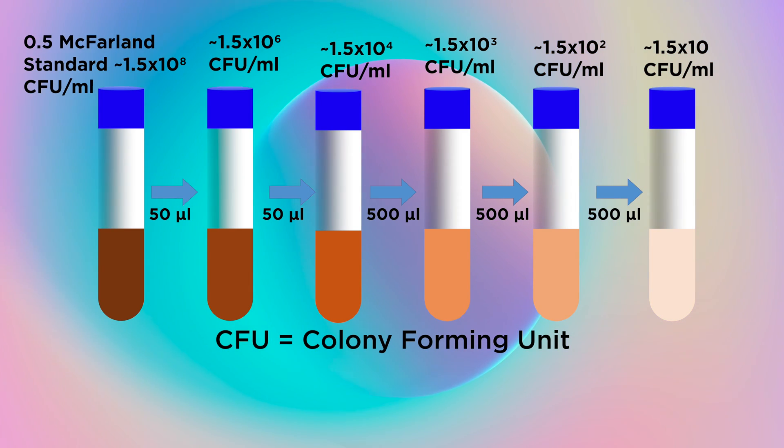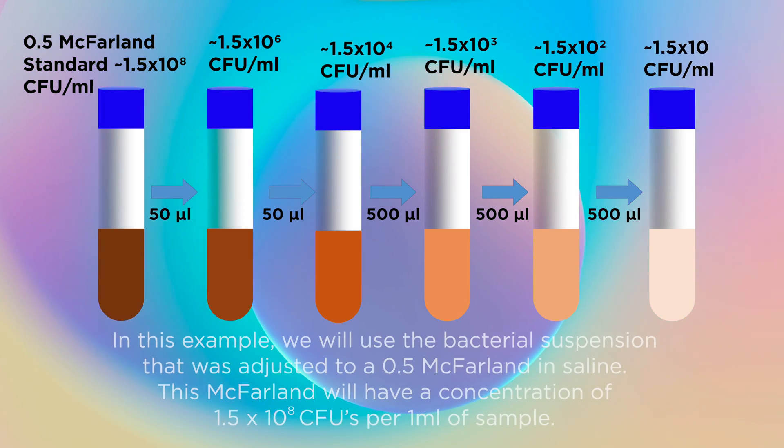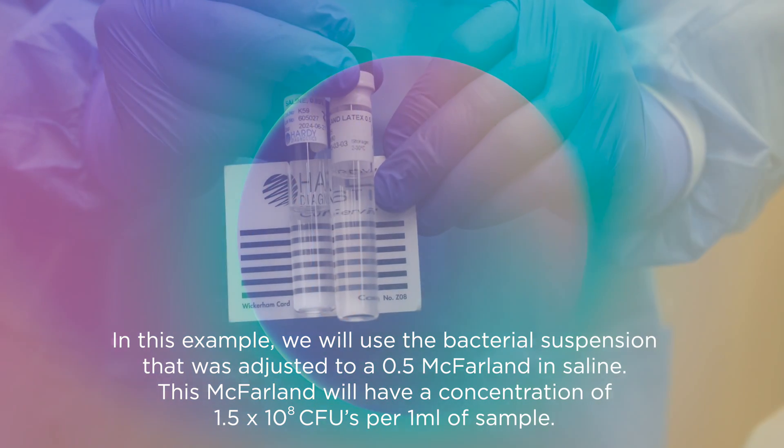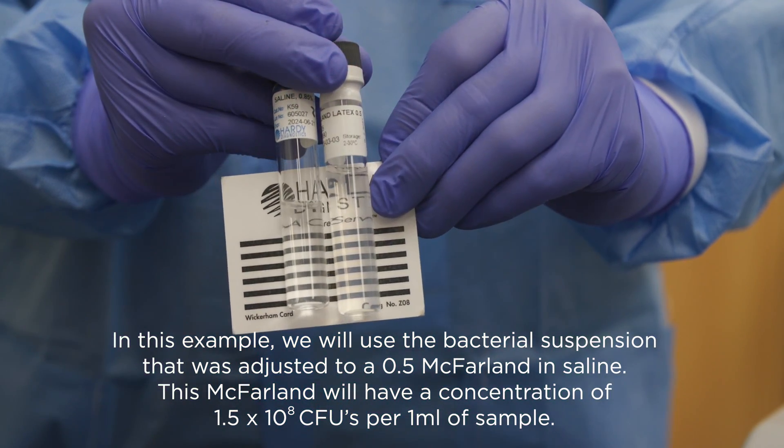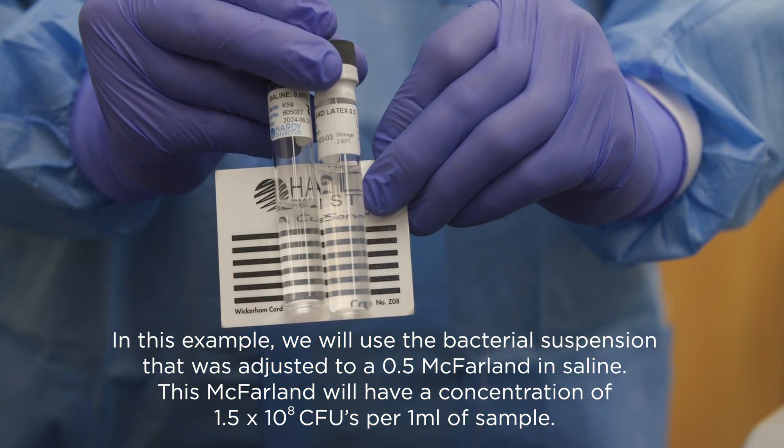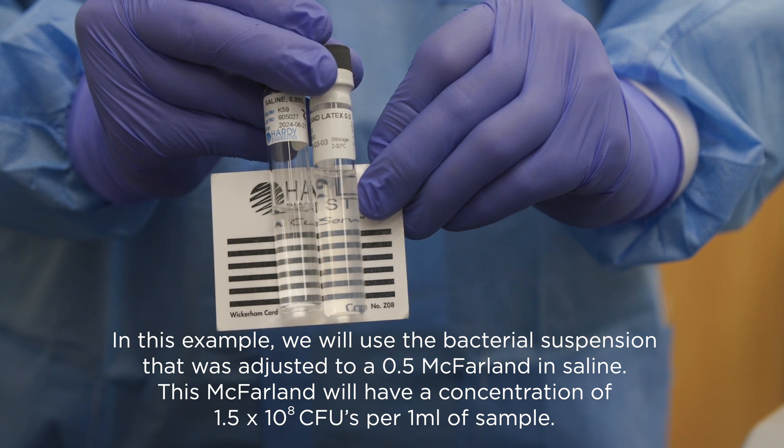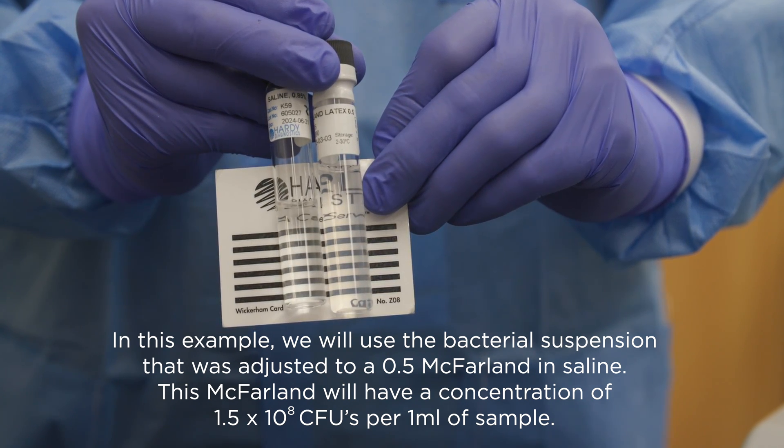Standardized bacterial suspensions can be diluted in order to obtain an approximate final concentration of the organism. In this example, we will use the bacterial suspension that was adjusted to a 0.5 McFarland in saline. This McFarland will have a concentration of 1.5 times 10 to the 8 CFUs per 1 milliliter of sample.